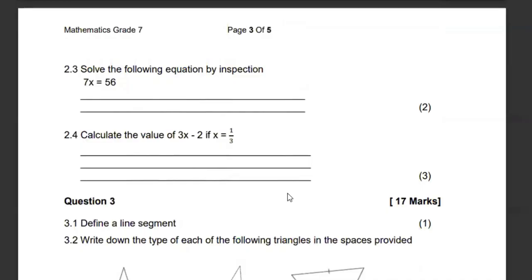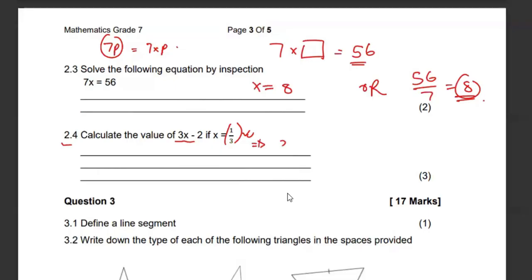Then they want us to solve by inspection. In our small grades, we used to have seven times a box must give us 56. So which number do we multiply by seven to give us 56, meaning that the number needs to be eight. So that is by inspection. You can try by checking. If you get 56 divided by seven, you shall end up with eight. Any number that is next to a letter, it simply means a multiplication. Then 2.4, calculate the value of this if X is 1 over 3. So where there is X, we're going to replace it with 1 over 3. This is going to be 3 times 1 over 3 minus 2. So 3 times a third is just 1 minus 2. We must get a negative 1 as our answer.